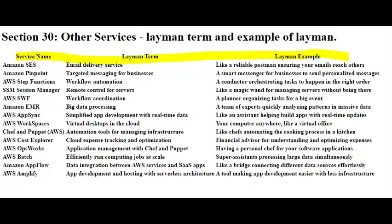Chef and Puppet are like kitchen assistants for your servers. They help you set up, manage, and maintain the software on your servers without you having to manually do every little task. It's a bit like having someone who takes care of preparing and serving the meals in a restaurant kitchen.